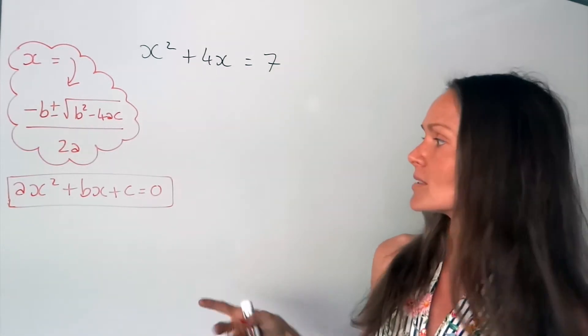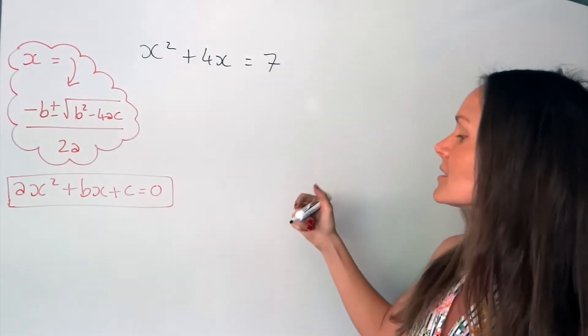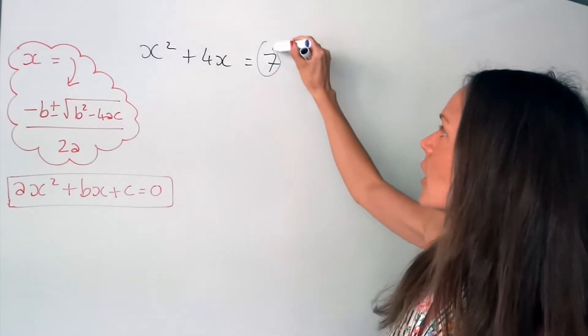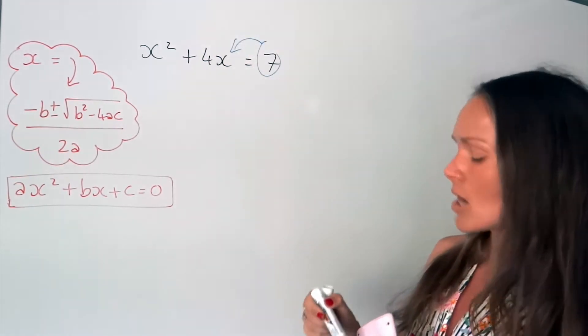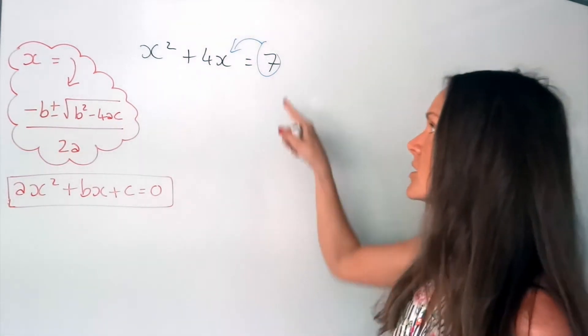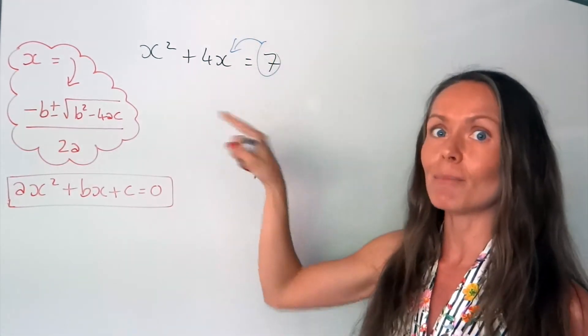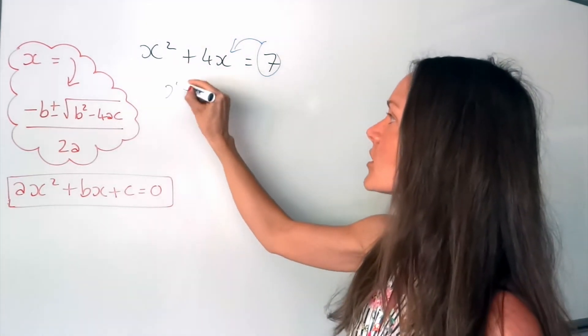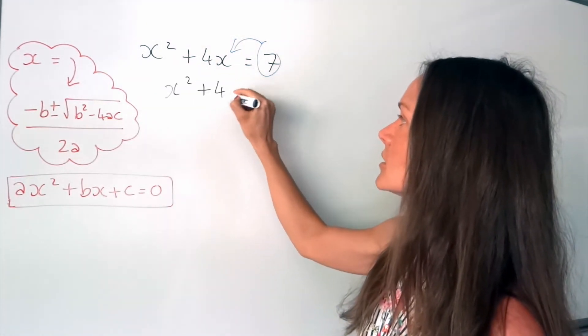it doesn't say equal 0 like it should, so we need to start by moving that 7 over to the other side. So remember when something moves across the equal sign, it changes sign, so this positive 7 will now become negative. So I'm just going to write out that new equation down there.